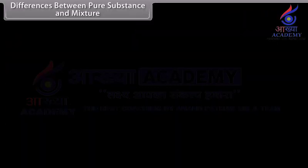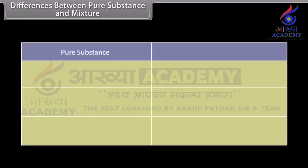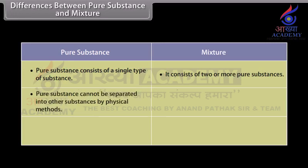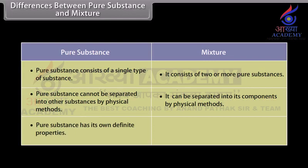Differences between pure substances and mixtures. A pure substance consists of a single type of substance, whereas a mixture consists of two or more pure substances. A pure substance cannot be separated into other substances by physical methods, but mixtures can be separated into their components by physical methods. A pure substance has its own definite properties, while a mixture shows the properties of its components.